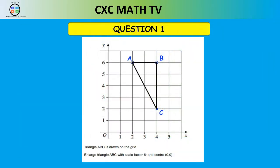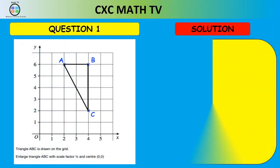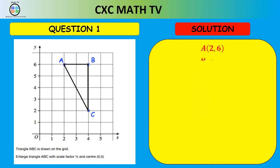Now let's look at some exam-style questions. Question one: triangle ABC is drawn on the grid. Enlarge triangle ABC with a scale factor of one half and center of enlargement (0, 0). Write down coordinates: A is (2, 6), B is (4, 6), C is (4, 2). The image point equals the scale factor times the object point. So A prime is one half times (2, 6) which gives (1, 3).